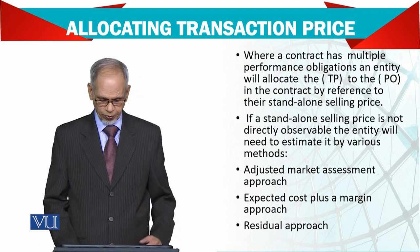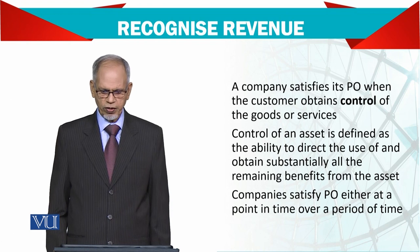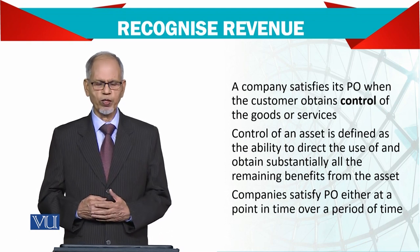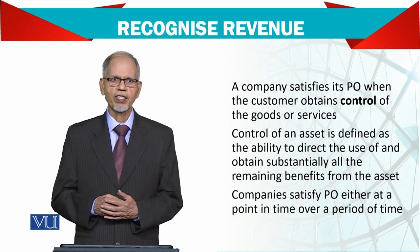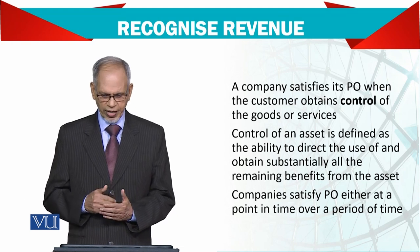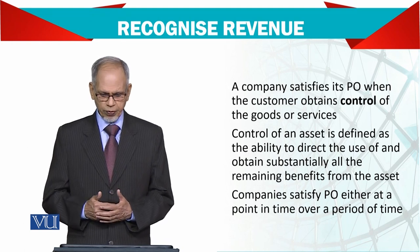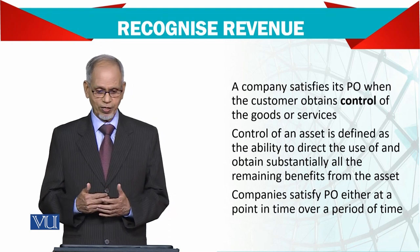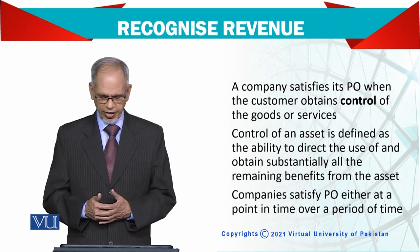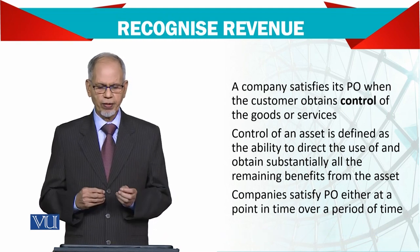A residual approach may be used if it is not possible to determine the standalone price directly. A company satisfies its obligation when the customer obtains control of the goods and services — this is the crux of the matter. Only then can you recognize the revenue, when the customer gets hold and control of those goods and services. Control of an asset is defined as the ability to direct the use of and obtain substantially all the remaining benefits from the asset. A company satisfies its obligation either at a point in time or over a period of time.